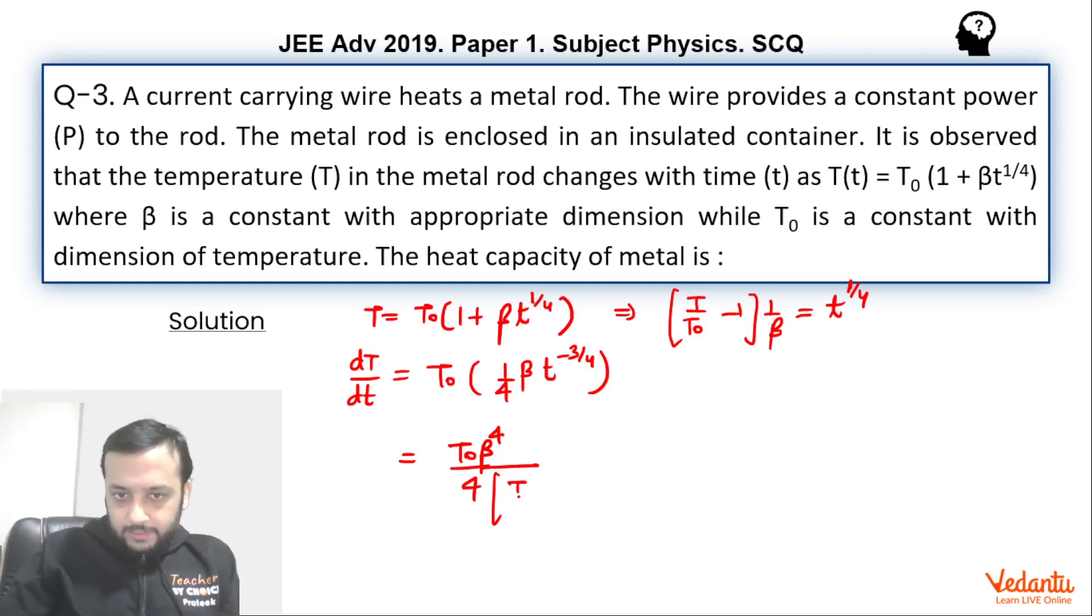So this will be T by T₀ minus 1, whole cube. So this further can be done as, if you take the LCM over here, T₀ to the power cube will be there and that will go to the numerator like this, and in the denominator we will be left with T minus T₀ whole cube. This is the rate of change of temperature. Now it is pretty simple.